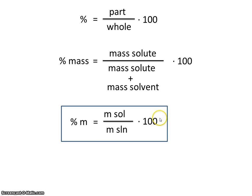So here's the formula written in a more concise way. Percent mass equals the mass of solute divided by the mass of the solution times 100.